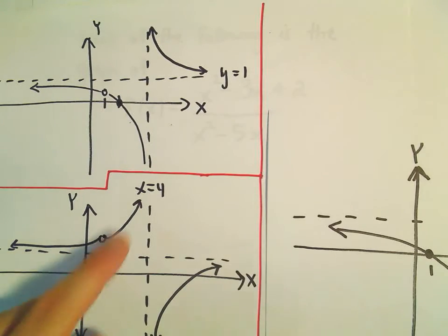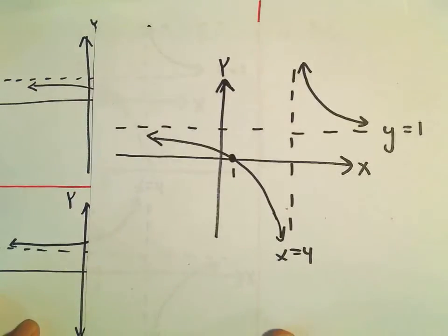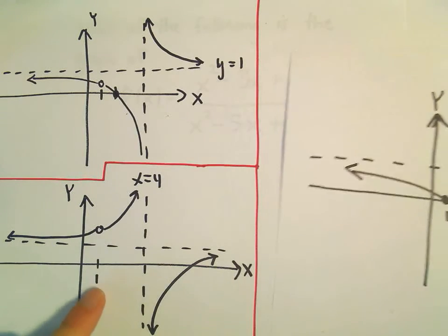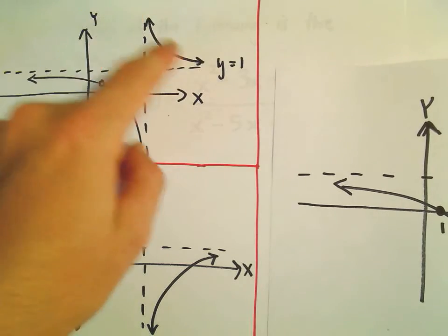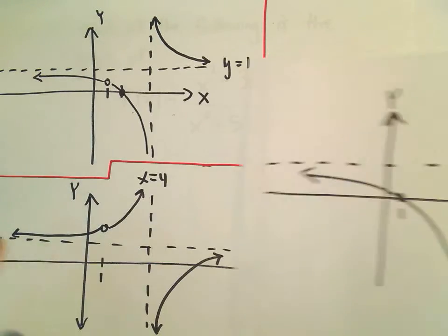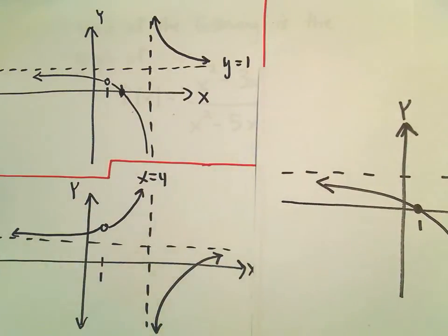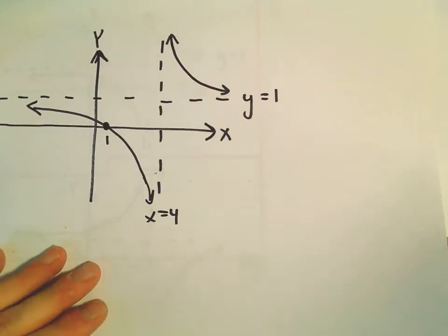So notice they all have vertical asymptotes here at x equals 4, horizontal asymptotes of y equals 1. And the difference, here this one's going down to negative infinity. So those two are a little more in common. Here this one's obviously a little different. The x-intercepts are in different places. The y-intercepts are in different places. So we want to figure out which one of these would be correct.